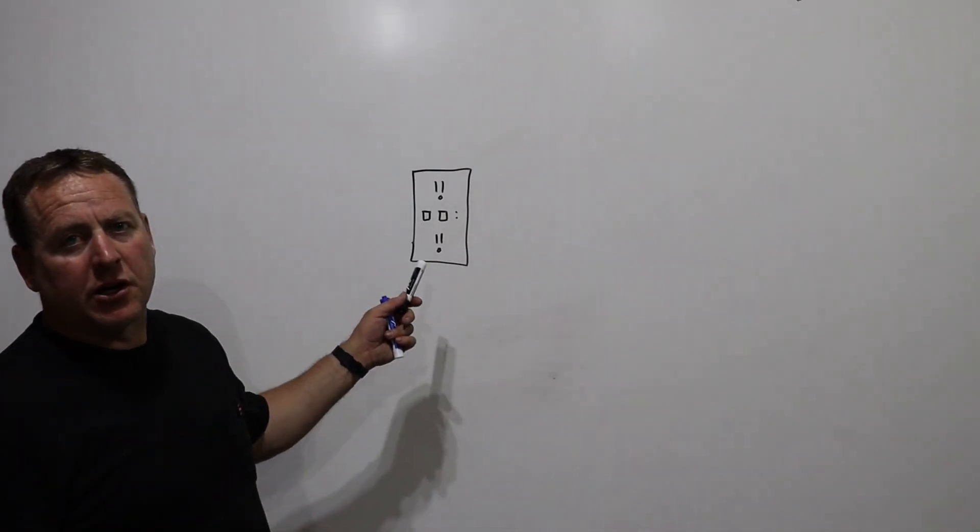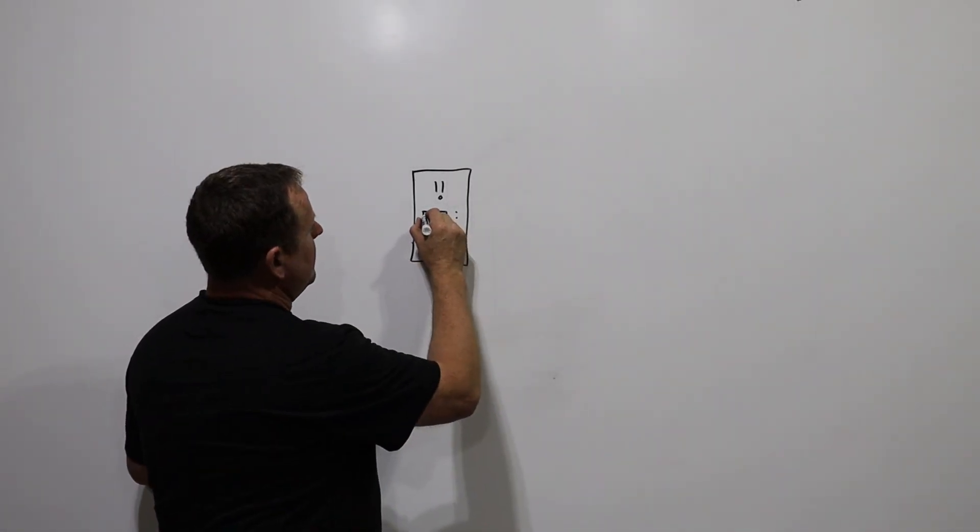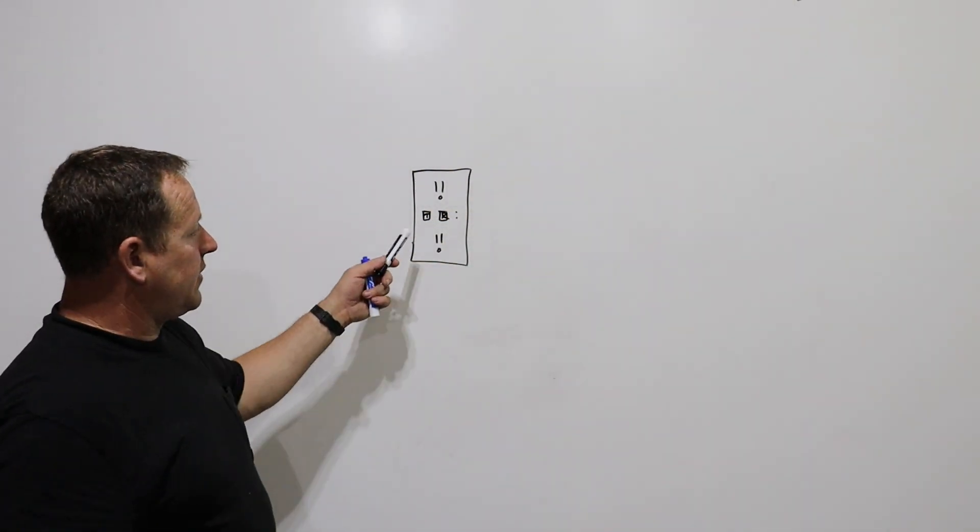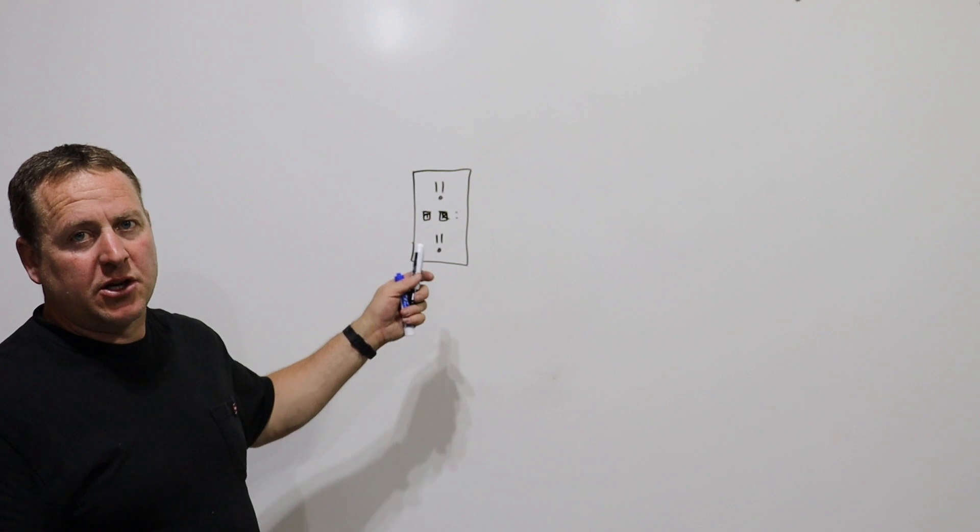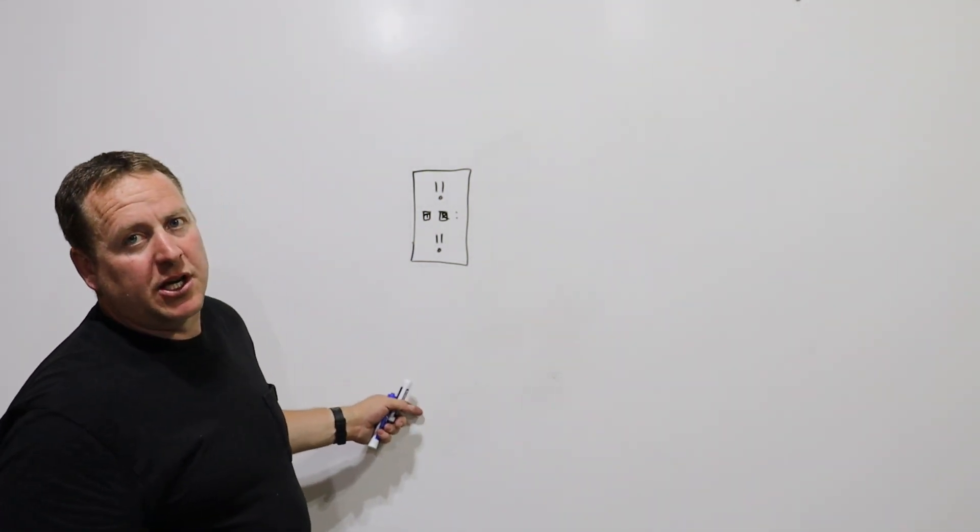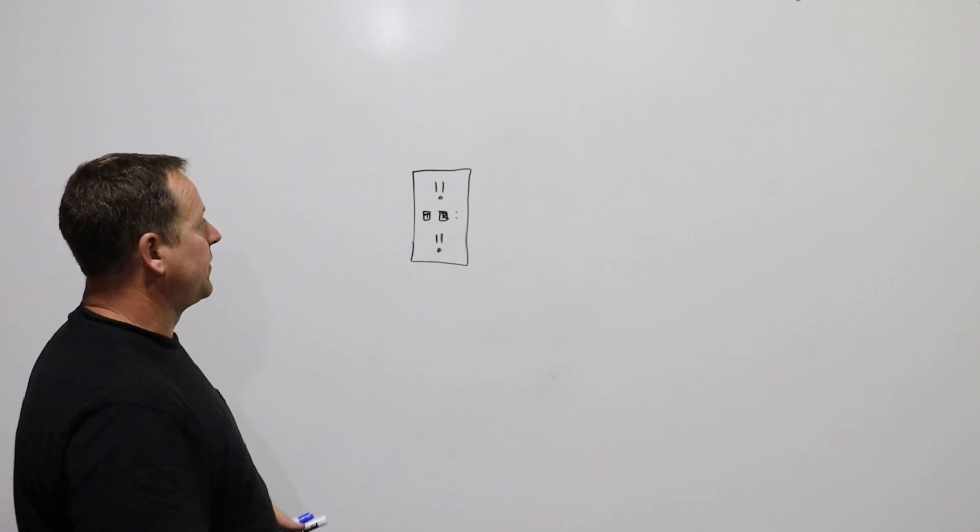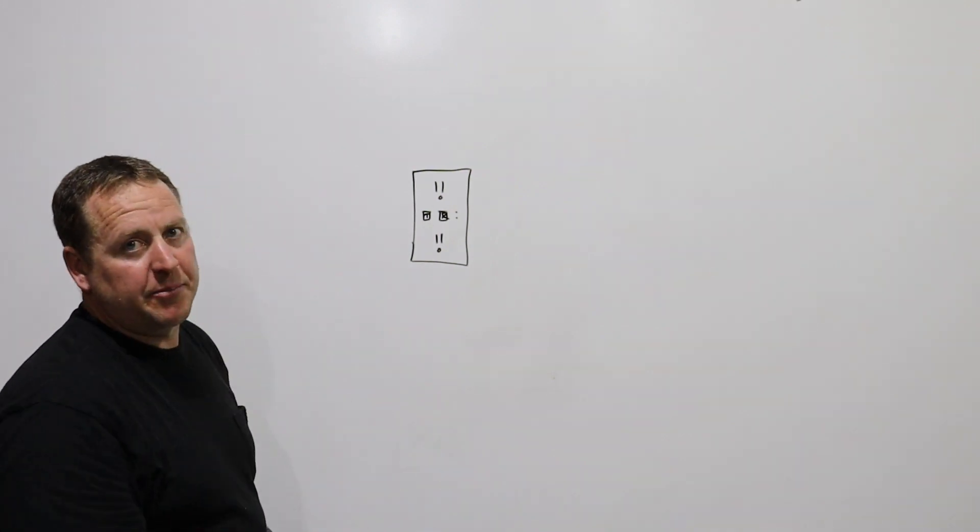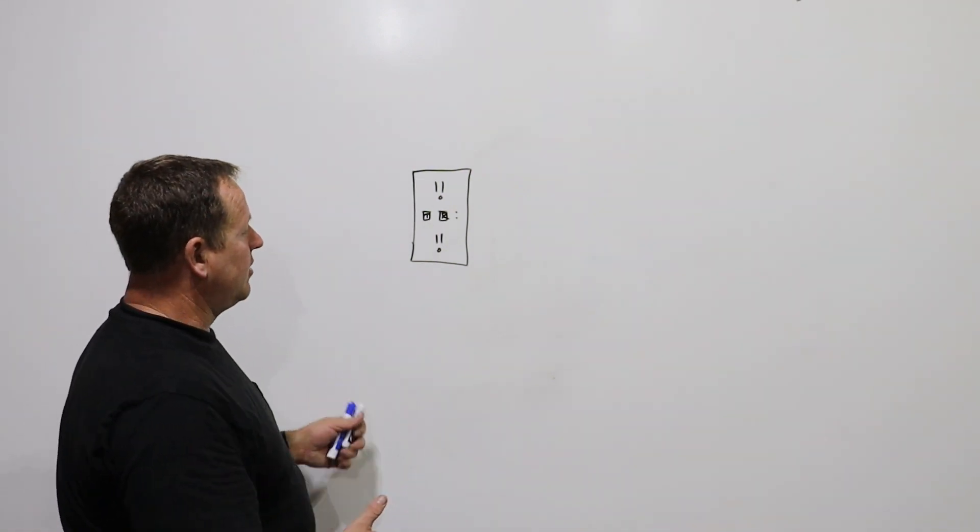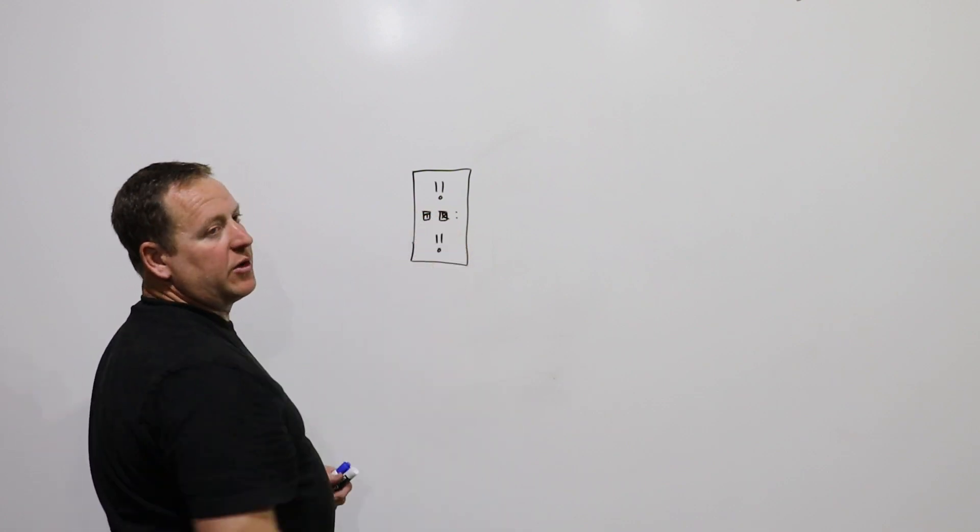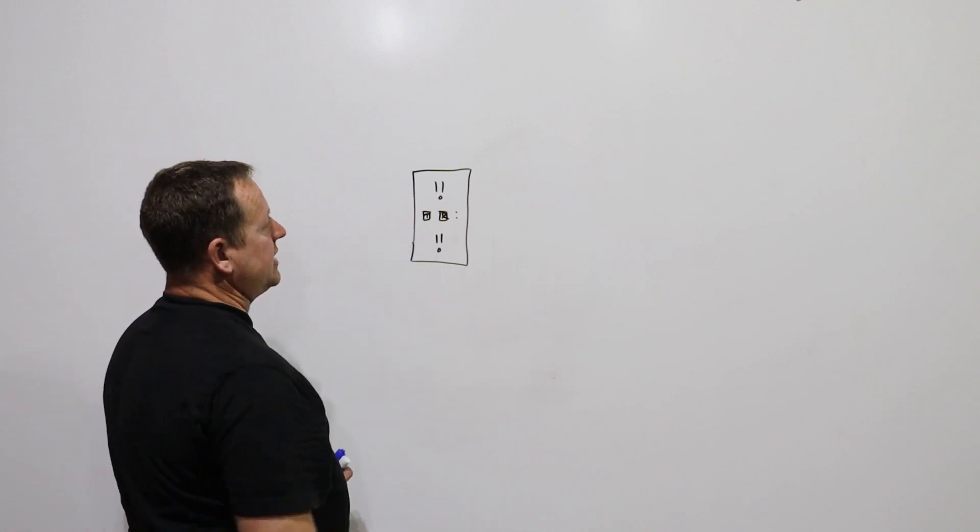On a ground fault circuit interrupter, it's going to have the test button, and it's going to have a reset button. If the ground fault circuit interrupter is good, hopefully you didn't get electrocuted because the circuit tripped out and you spilled your coffee on the toaster. Once you get that mess cleaned up, and you want to go back to making toast, you can go back, as long as everything is good, hit reset, and the circuit should reset.